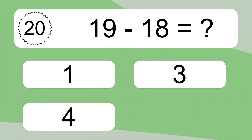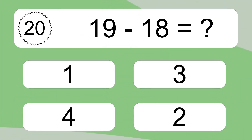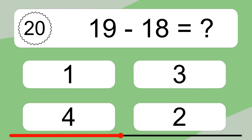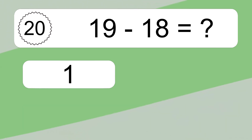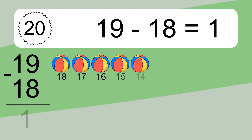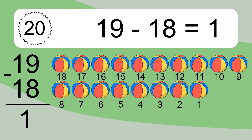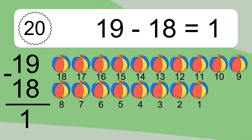19 minus 18 equals what? 19 minus 18 equals 1. Let's count it. 18, 17, 16, 15, 14, 13, 12, 11, 10, 9, 8, 7, 6, 5, 4, 3, 2, 1.